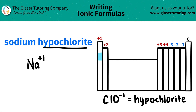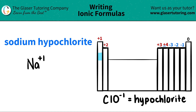Here's a trick: if you see that you have an ending to a part of a formula that ends in -ite, it's always a polyatomic ion. Those are not going to be on the periodic table — you have to memorize them. So hypochlorite is always ClO with a negative one charge.